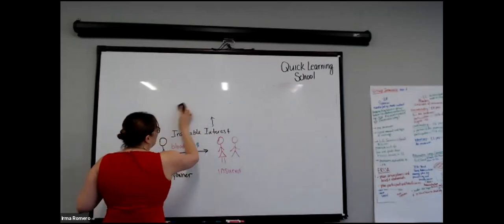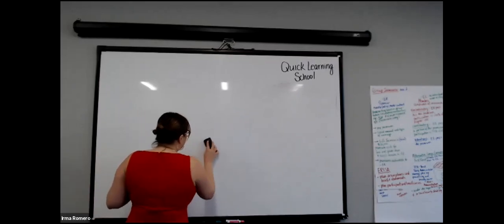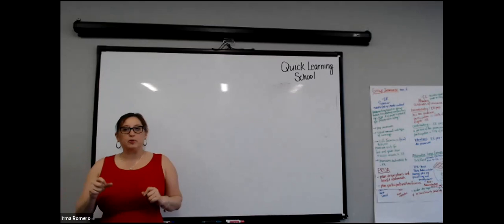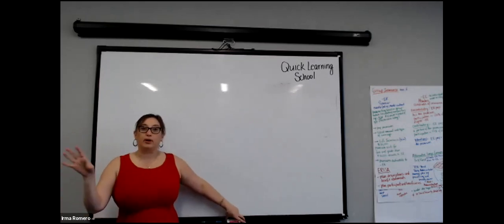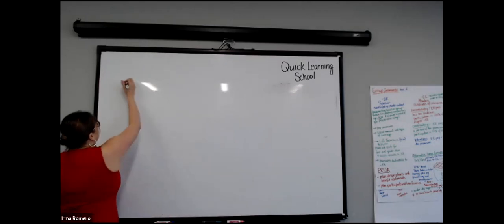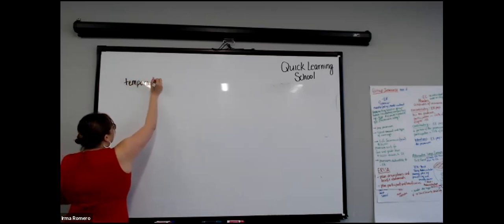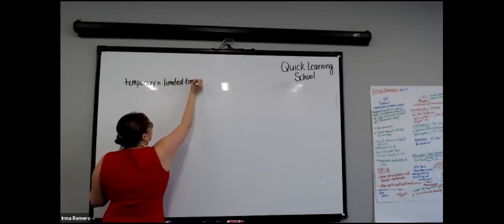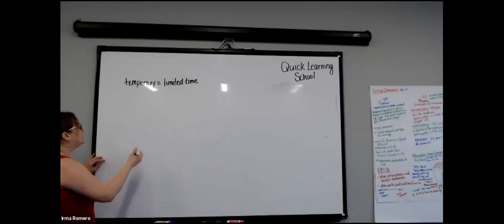The first product we're going to talk about is term — it's the simplest to understand. But first, some foundation: when it comes to life insurance products, you want to determine whether it's a temporary need or a permanent need. Temporary means for a limited time — at some point it's going to run out or expire.